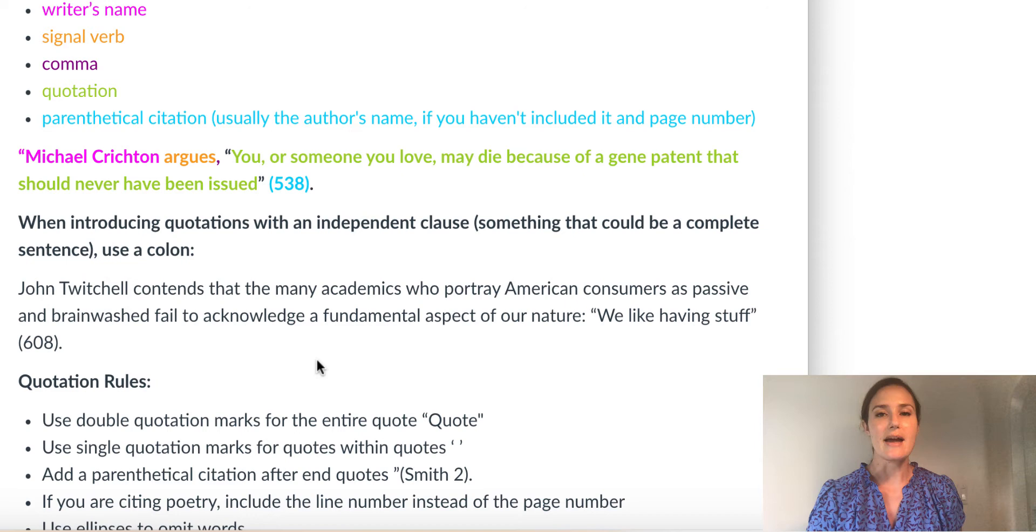John Twitchell contends that many academics who portray American consumers as passive and brainwashed fail to acknowledge a fundamental aspect of our nature. Colon, quote, we like having stuff, end quote, page number followed by the period. Notice in this example, the quote is actually really short. It's a really powerful quote in all its simplicity. We like having stuff, that's so simple that it's quite effective. But the lead up to the quote, the sentence that introduces the quote doesn't just say John Twitchell contends. You can do a little bit of analysis when you're introducing the quote and explain what he's arguing in the essay.